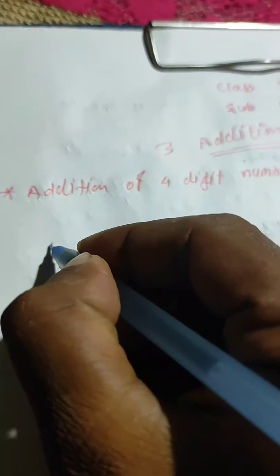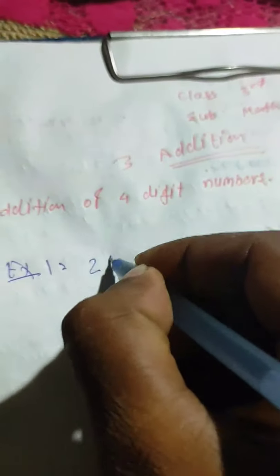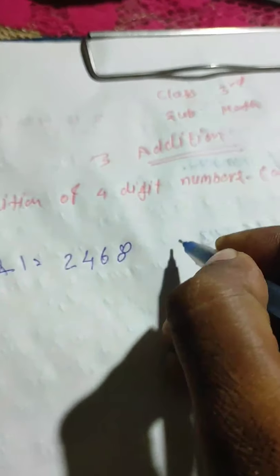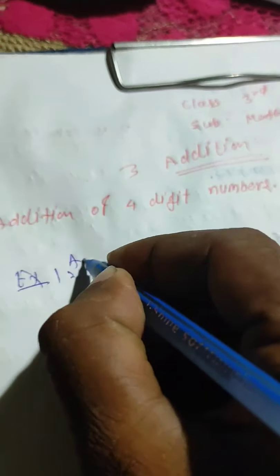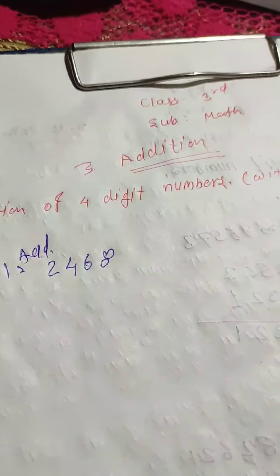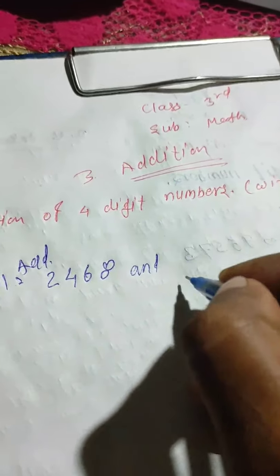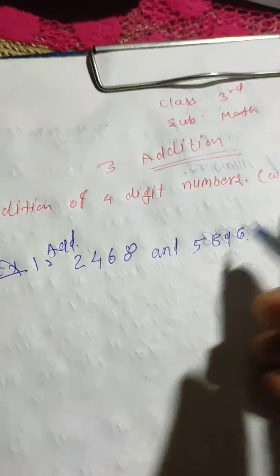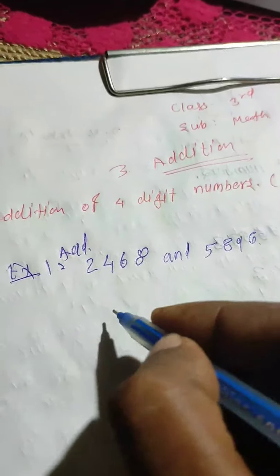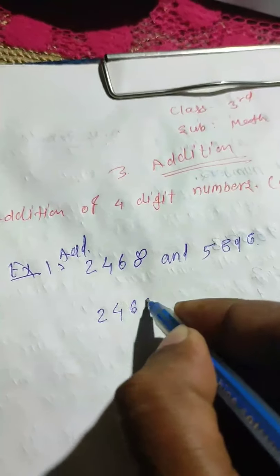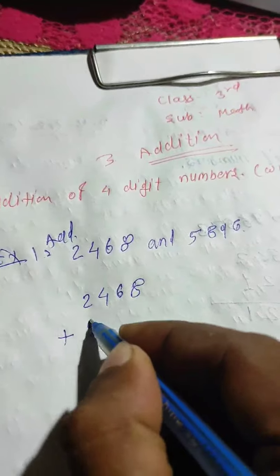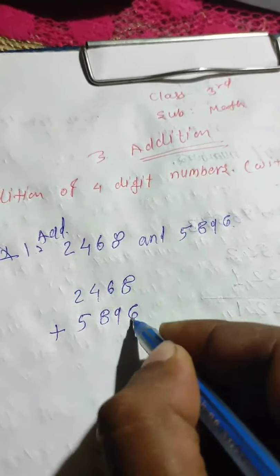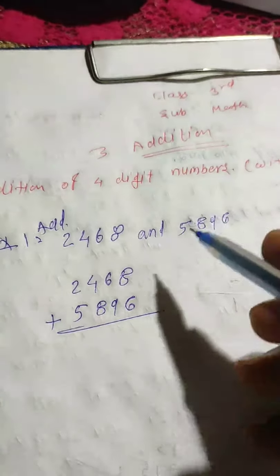First example: two thousand four hundred sixty eight, added to five thousand eight hundred ninety six. Arranging these numbers: two thousand four hundred sixty eight plus five thousand eight hundred ninety six.